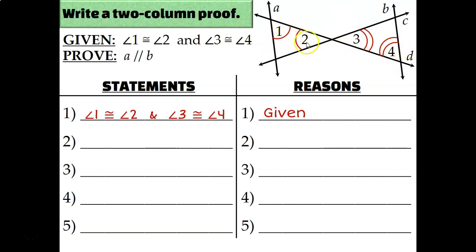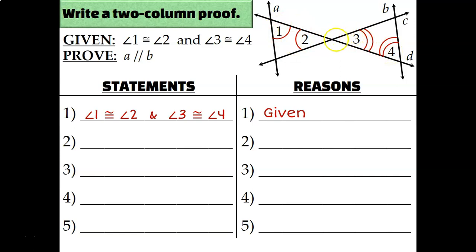Looking at the types of angles, if I focus on transversal D and lines A and B, angle 1 and angle 4 are in between those lines — making them interior — and on opposite sides of transversal D. So if I can show that angle 1 and angle 4 are congruent, I can prove that line A and line B are parallel. Right now they have different markings, but it's possible they're all actually congruent.